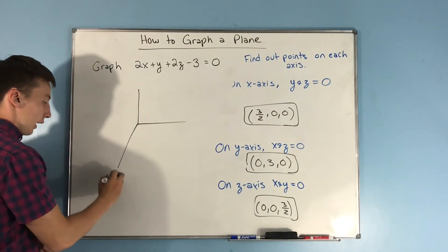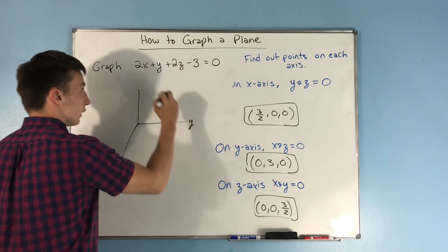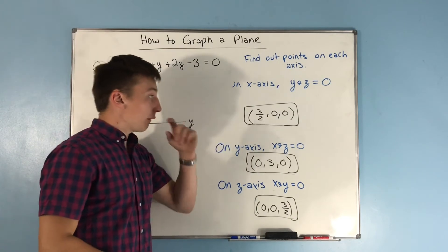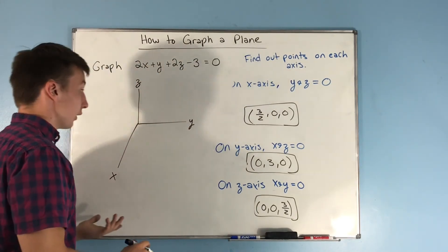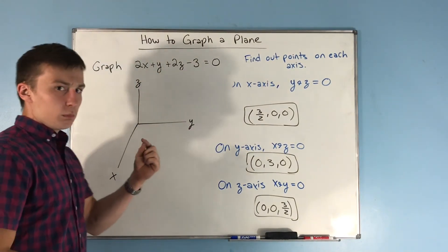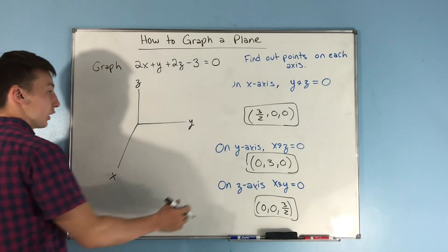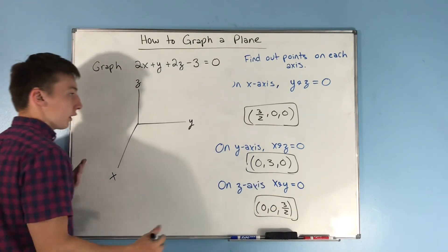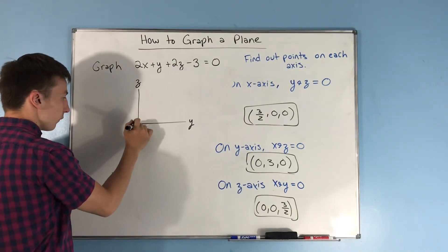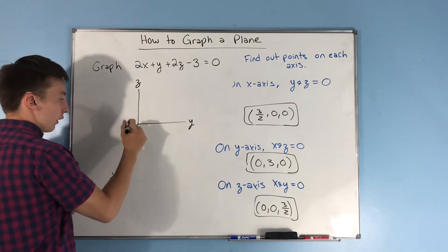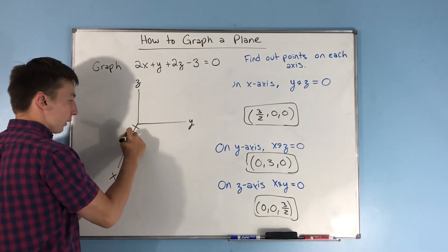And what we're going to do is graph our plane. So we have our x-axis, our y-axis, and our z-axis. We have the point (3/2, 0, 0). Now pay attention closely. I'm going to make every tick mark 1 half, just because we have two things that are over 2. So 1, 2, 3, that's going to be 3 halves. And we're going to put a point here.